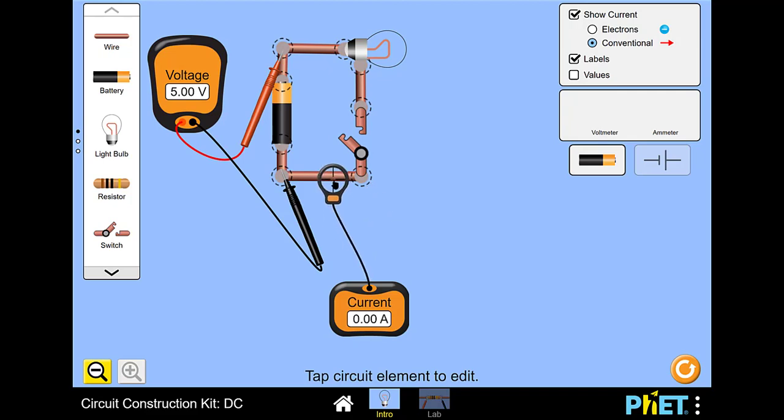Next, we'll take the ammeter to measure the current through one of the wires, and we see that there's no current flowing or zero amps because the switch is open.